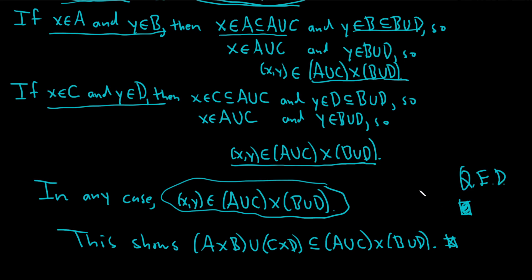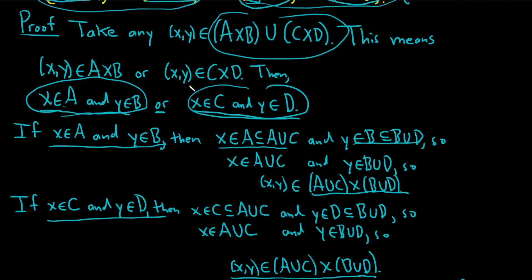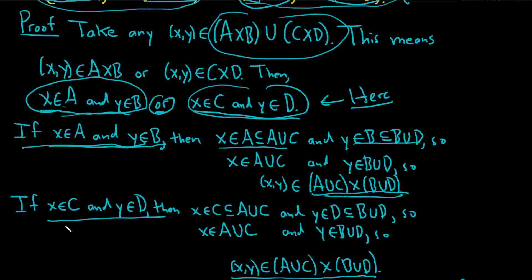I think the hardest part for people might be right here — you get to this point and you're not sure what to do. You might think, is there some logic trick or set algebra I can use? Probably, but it's an or statement, so just consider each case. If this happens — done. If this happens — done. In any case, we're done. I hope this video has been helpful. Good luck!